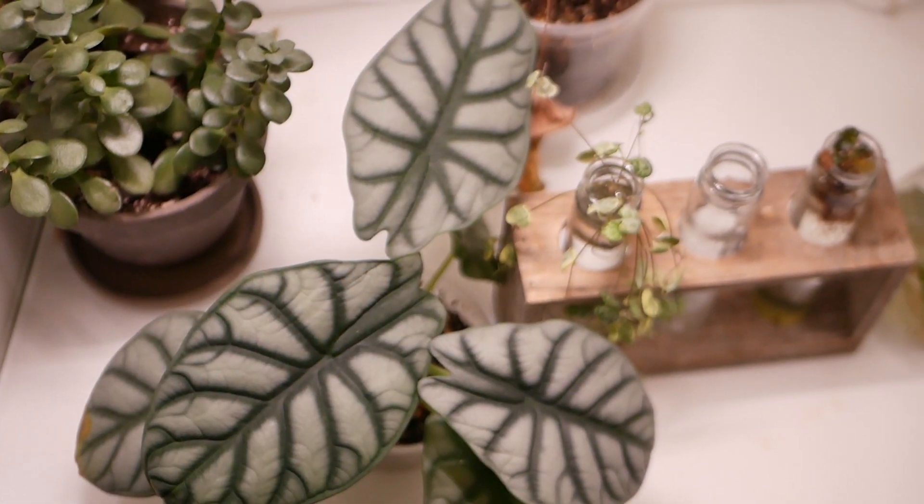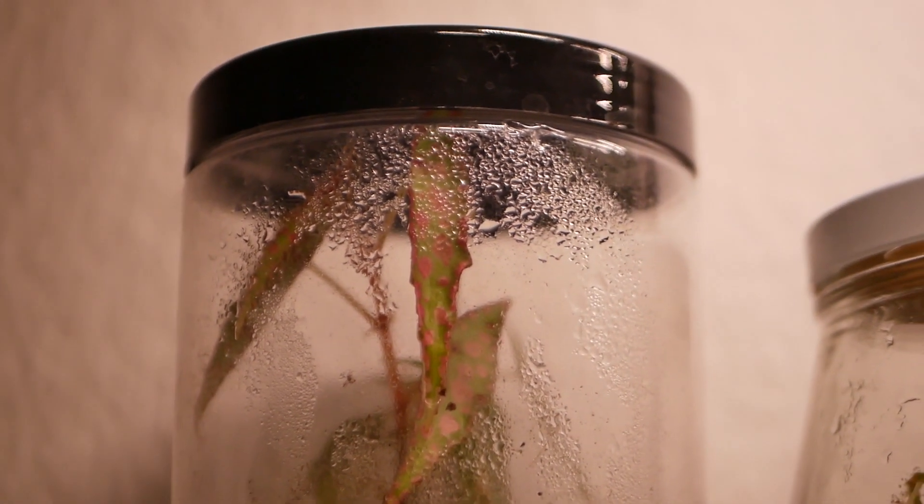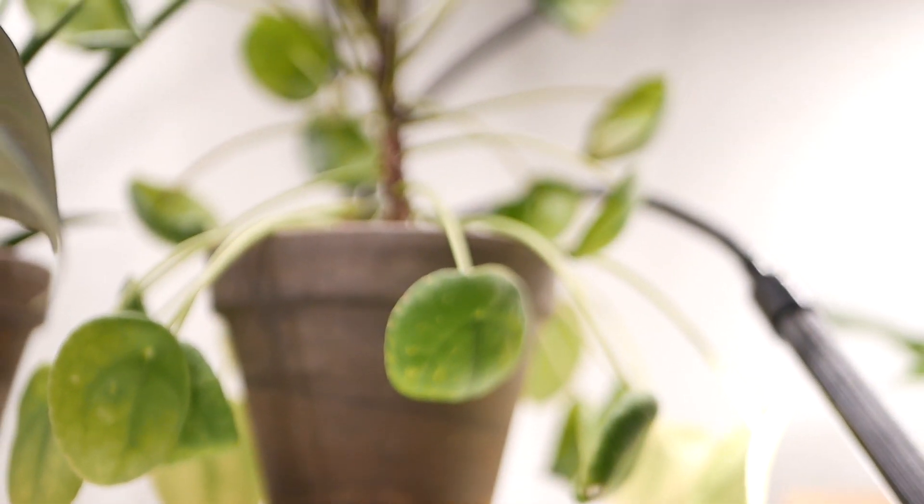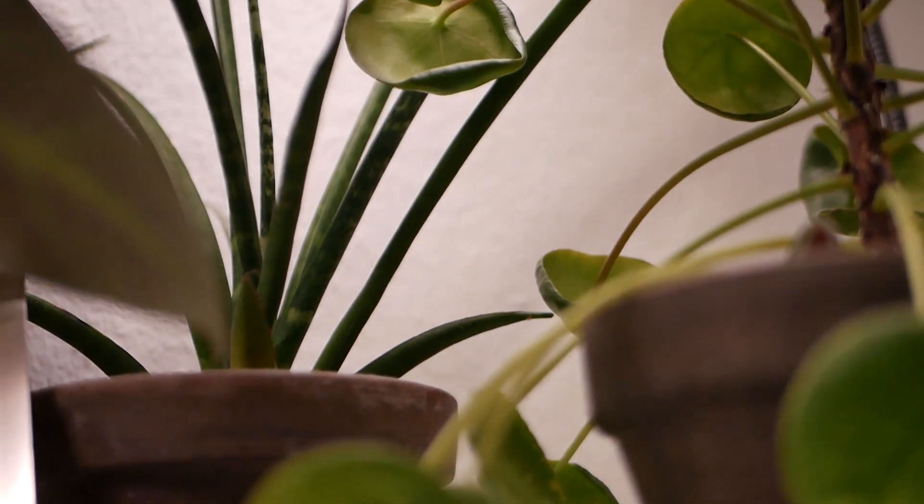Another alocasia silver dragon, my begonia amphioxus, and my pilea. And in the back you can see my snake plant.